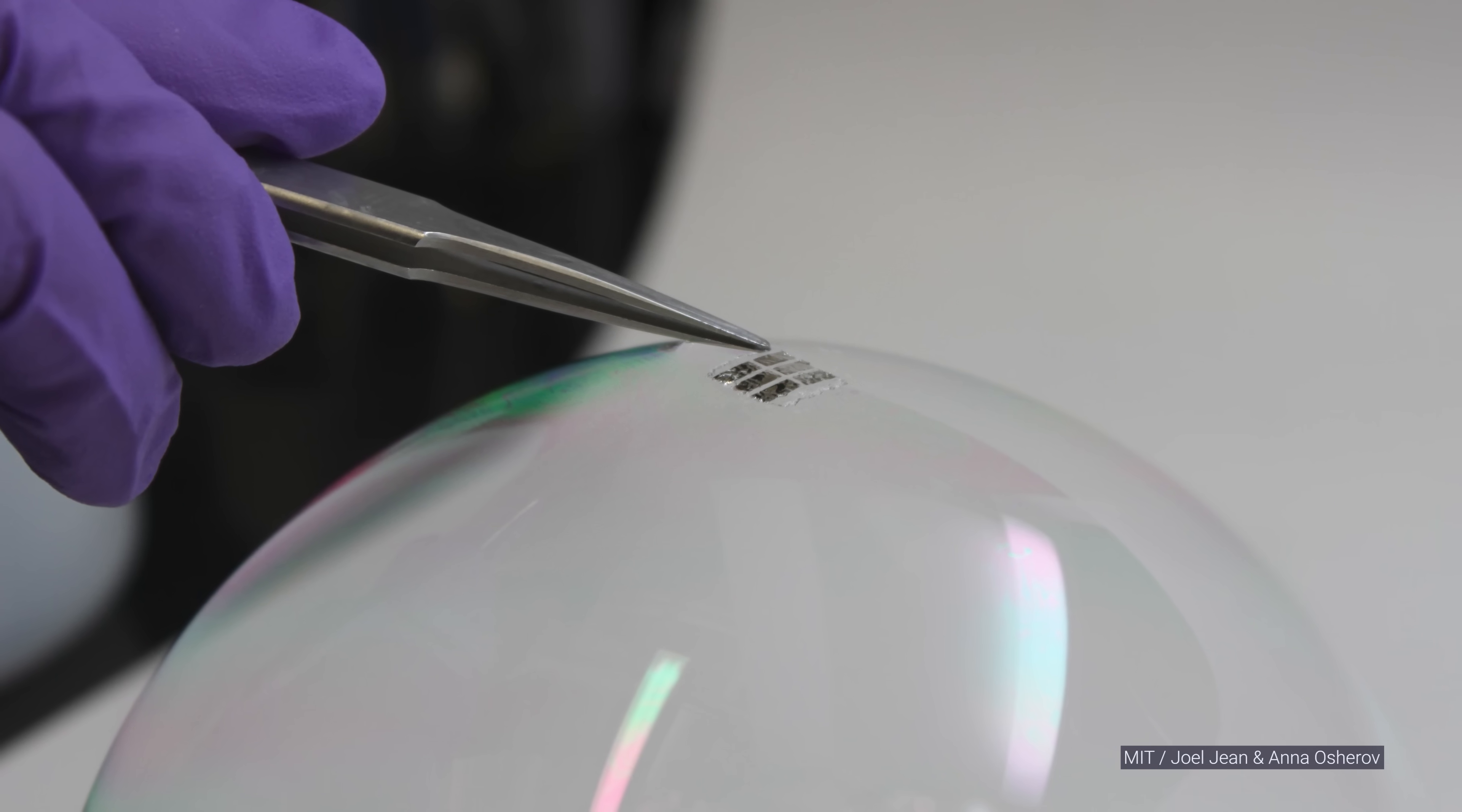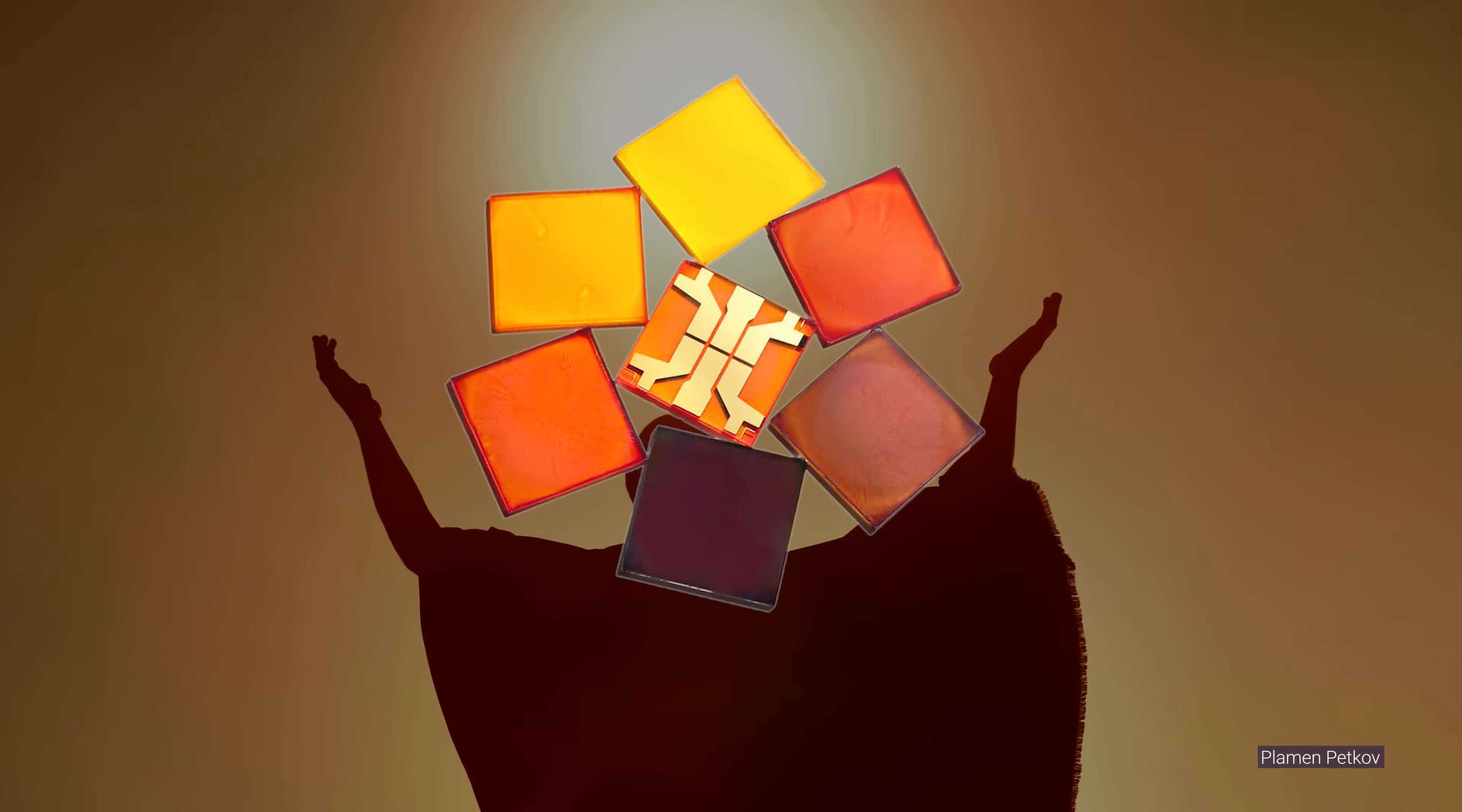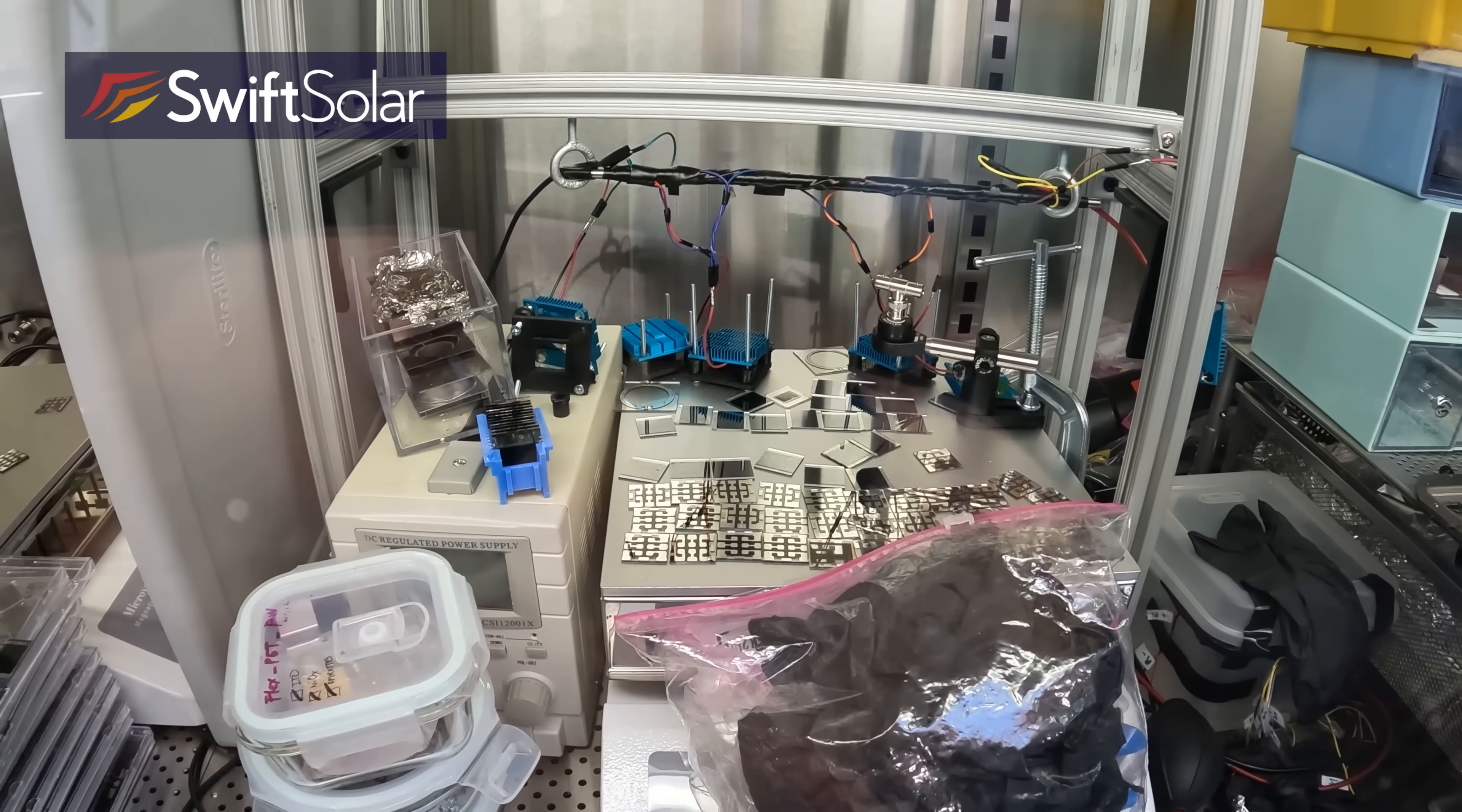A solar panel so lightweight that it can be balanced atop a soap bubble. Well, that is known as the holy grail of solar. They're called perovskites, and they might just revolutionize how humans generate energy from sunlight. We headed to Silicon Valley to meet Joel Jean, the CEO of Swift Solar, one of the leading teams working to bring perovskite solar technology to light.